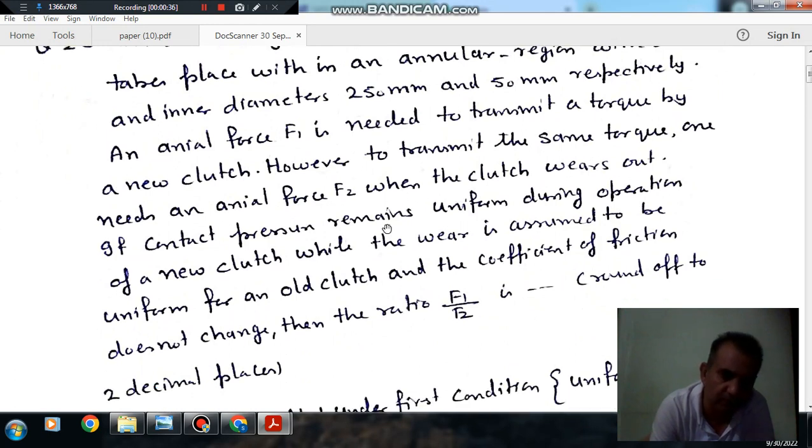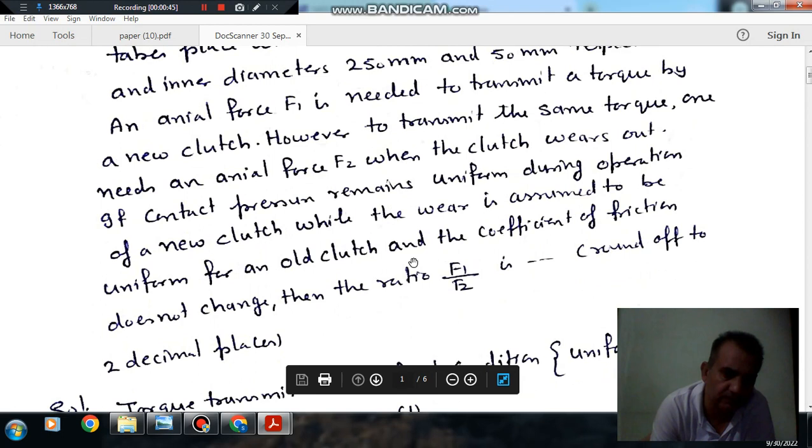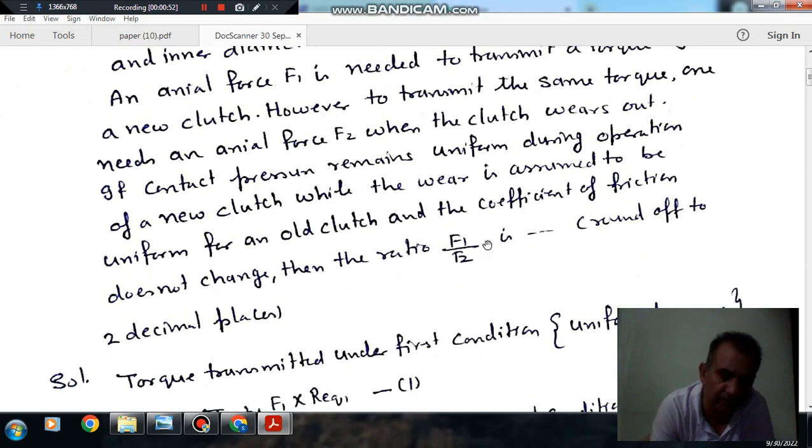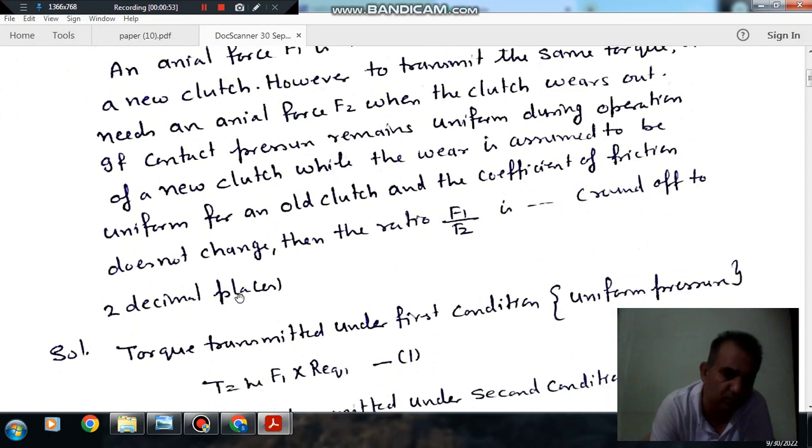If contact pressure remains uniform during operation of a new clutch, while the wear is uniform for an old clutch and the coefficient of friction does not change, the ratio F1 by F2 is to be found up to 2 decimal places.